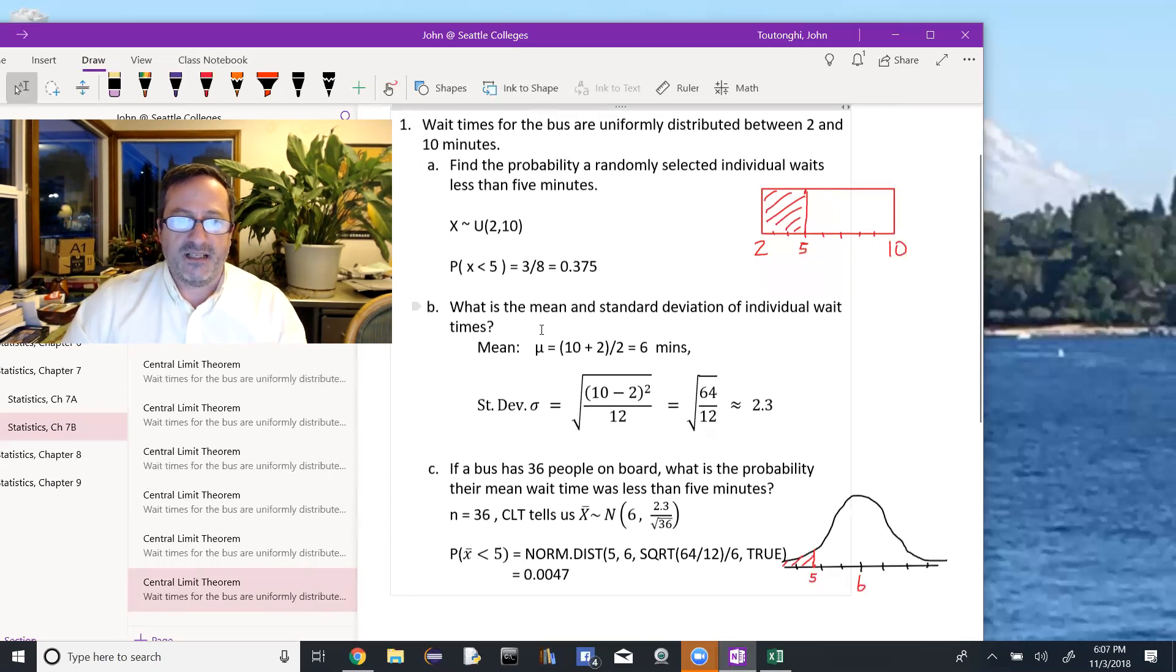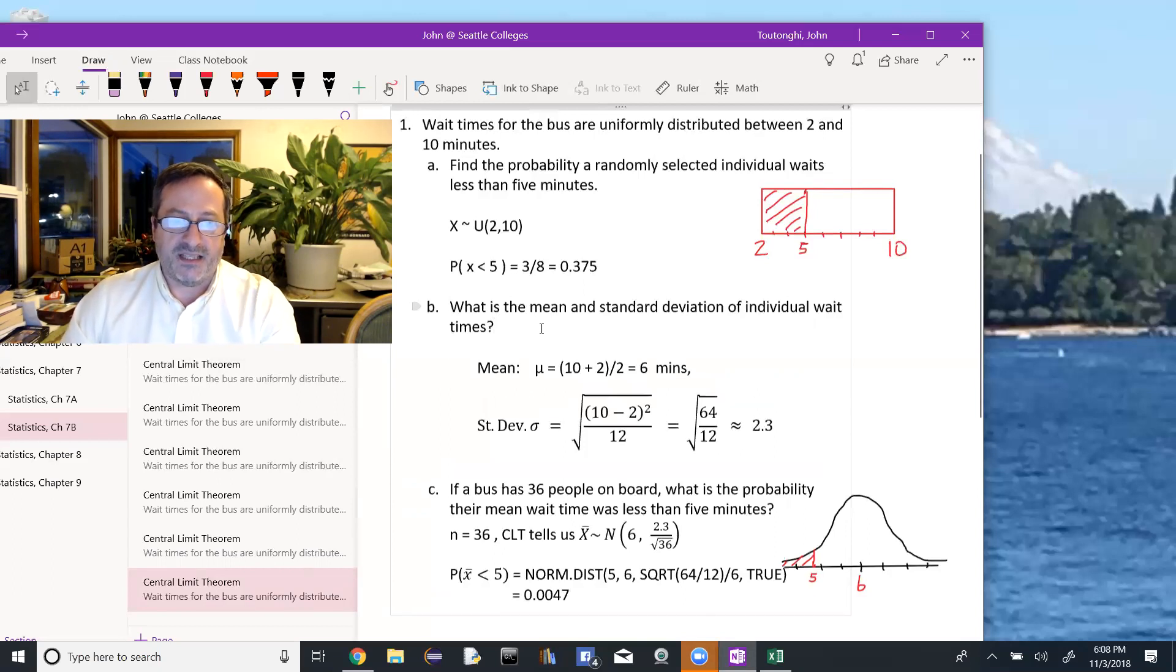I'm going to need the mean and the standard deviation in order to apply the central limit theorem for part C. So part B is here so that we can find this mean and this standard deviation. The mean for a uniform distribution is the average of the start and stop values. In this case, 6 minutes. And the standard deviation for a uniform distribution is b minus a squared divided by 12, all under the square root, which in this case is approximately 2.3.